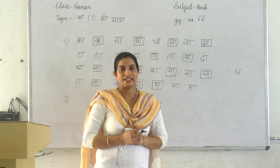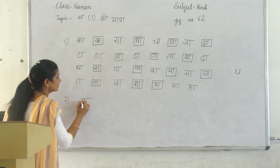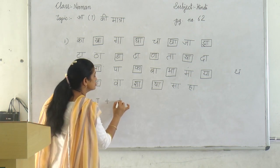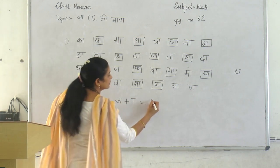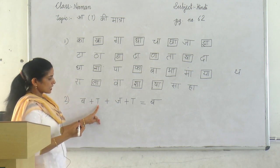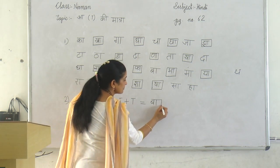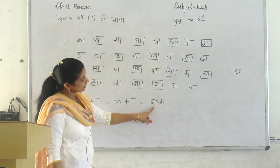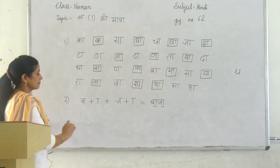Now we are going to do the second question: Shabd milau — Akshar milau, Shabd banao. So this is ba plus A ki matra plus ja plus A ki matra. First write ba, then add A ki matra, then ja, then A ki matra again. Read it: ba, bah, ja — baja. Next is baja.